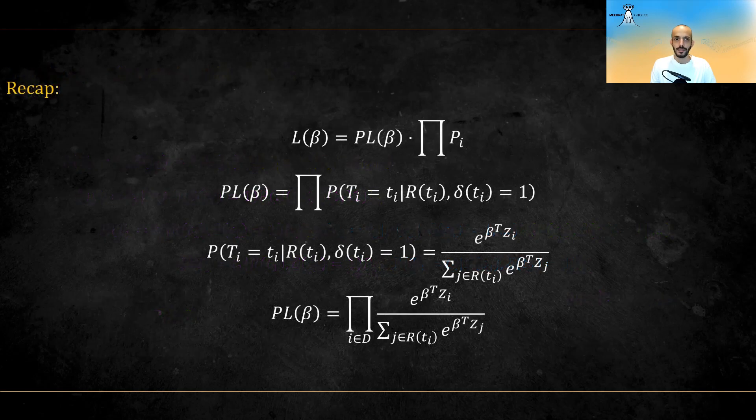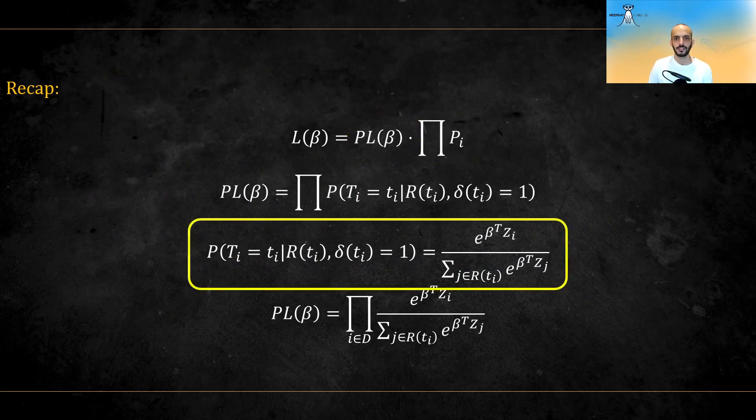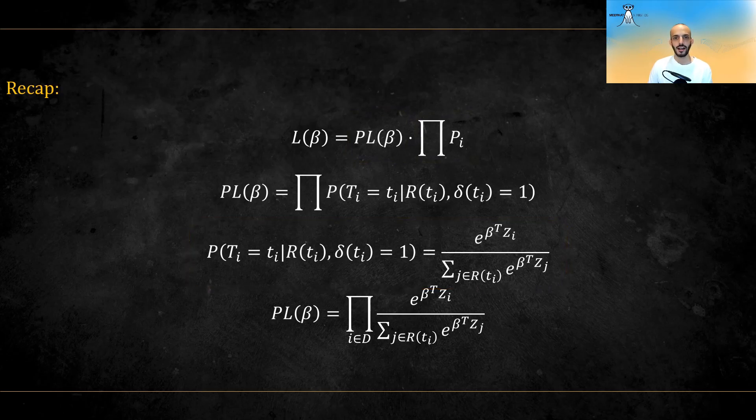So to recap, we saw how to decompose the full likelihood into the partial likelihood and other terms we can't reason about, and also how each term in the partial likelihood individual term is equal to this quotient. Hence, we understand a bit better how we got to the partial likelihood and hopefully made this quantity a bit less cryptic.